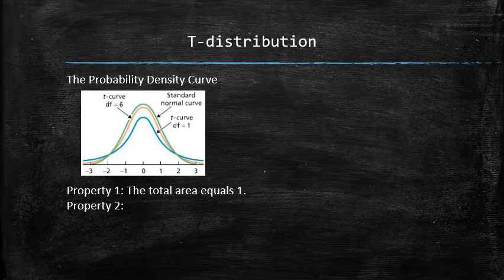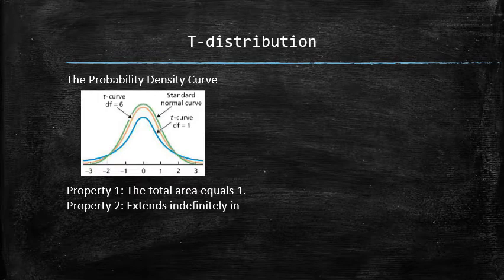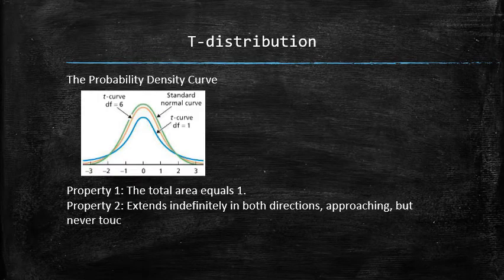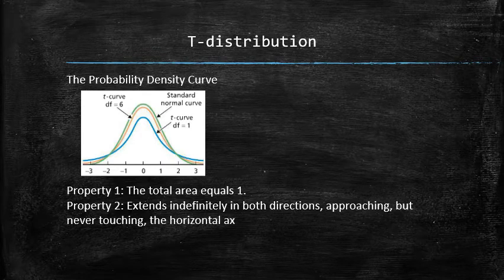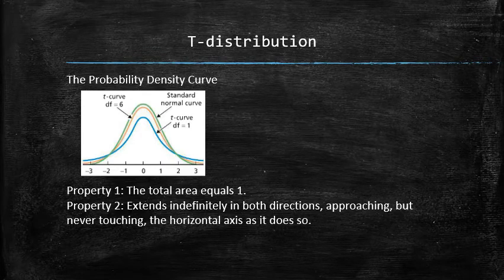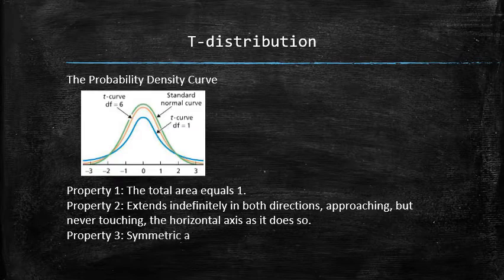Property number two, the curve extends indefinitely in both directions, approaching but never touching the horizontal axis. Property number three, the curve is symmetric about zero.